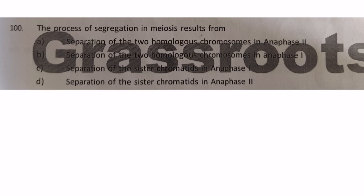Next question: the process of segregation in meiosis results from which event? The options involve separation of homologous chromosomes or sister chromatids in anaphase I or anaphase II. Segregation in meiosis occurs in anaphase I, and it is the two homologous chromosomes that separate — not sister chromatids. Answer: option B.